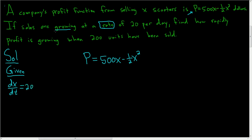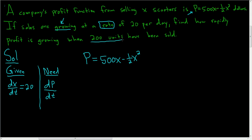Because sales are growing, it's a positive 20. If sales were decreasing, it would be a negative 20. Now, what we need is how rapidly the profit is growing — that's a rate of change. So we need dP/dt, the rate of change of profit with respect to time, when 200 units have been sold, i.e., when X is equal to 200.